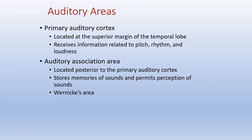For auditory processing, the primary auditory cortex is located essentially straight in from the external auditory canal through the internal auditory canal, and the association area is just posterior to it. The primary auditory cortex provides information about pitch — high or low — rhythm, pattern, and intensity. That information then goes to the auditory association area, where we put labels on what we're hearing: is there a memory of this sound, is it a person's voice, does it sound familiar? This auditory association processing falls into a brain region called Wernicke's area.